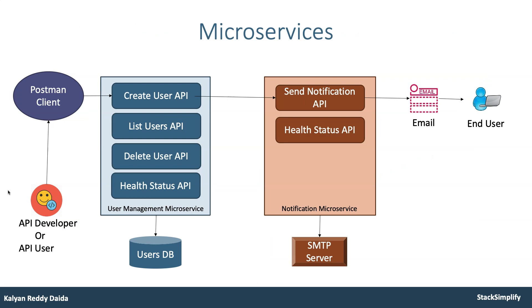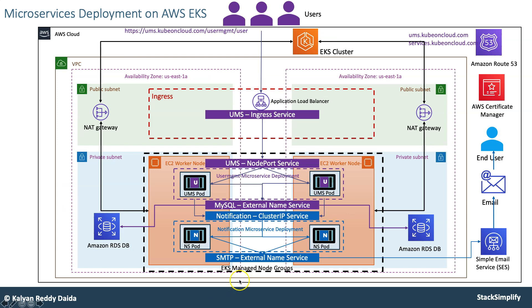We then move on to the microservices section with two independent microservices built exclusively for testing: service discovery, distributed tracing, and canary deployments. We use the user management microservice and notification microservice. When a developer uses a Postman client to create a user, it calls the notification API and sends an email to the end user. We'll implement the full service discovery use case end-to-end with UMS node port service, MySQL ExternalName service, and notification Cluster IP service in EKS.